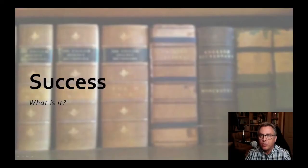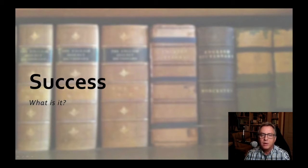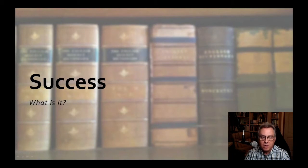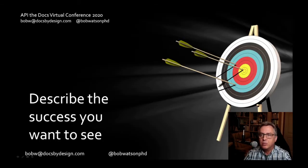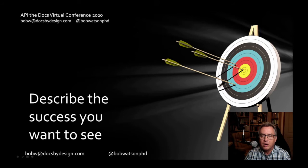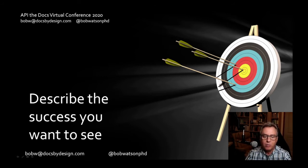I'm also going to focus on success. So let's talk about what success is. Merriam-Webster describes success as to attain a desired object or end. That seems easy enough to interpret for documentation. We start by describing the success that we want to see — what goal we want to accomplish, what end we want to achieve. Where is the finish line? In documentation, the finish line could be a moving target — it could be the finish line for this month — so don't get hung up on this as a fixed point.